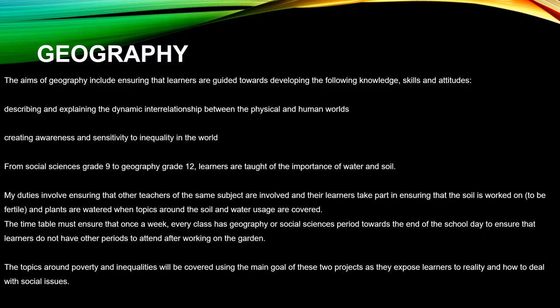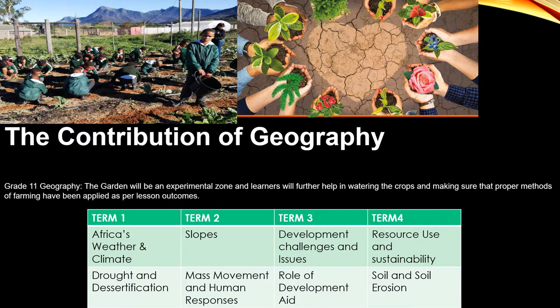Topics around poverty and inequalities will be covered using the main goals of these two projects, exposing learners to reality and how to deal with social issues. Geography will support these projects throughout the year. In grade 11 geography, the garden will serve as an experimental zone where learners will assist in watering crops and ensuring proper farming methods are applied as per lesson outcomes. At the end of term one, topics involve Africa's weather and climate, drought and desertification, helping learners understand why all crops cannot be planted in one garden and understand seasons of the year.